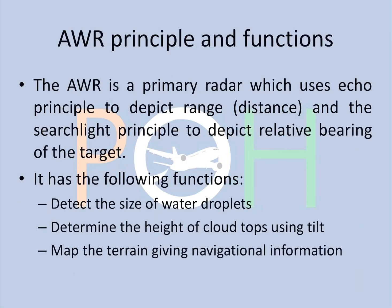It uses two principles. One is the echo principle, which is used to find the distance or depict the range, and the searchlight principle is used to depict the relative bearing of the target — so where it is located and how far.